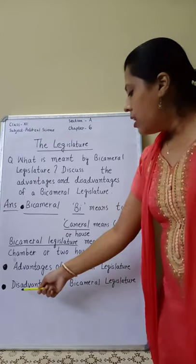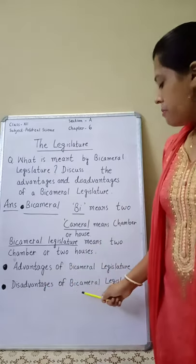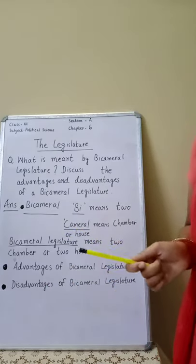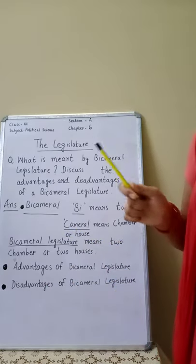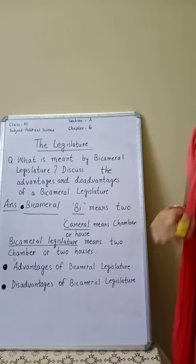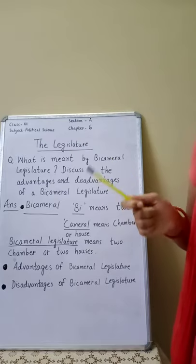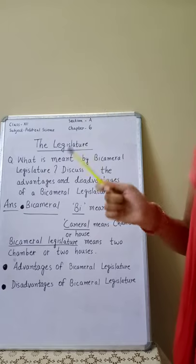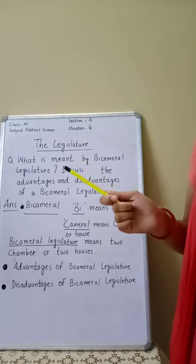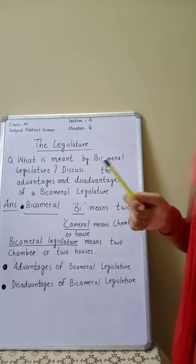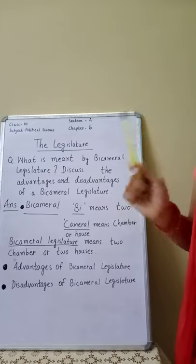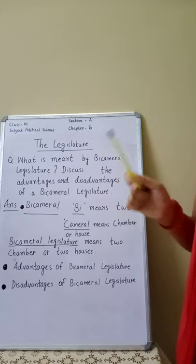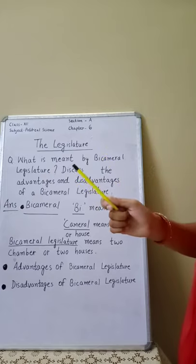Now, the disadvantages of bicameral legislature. First point: prevention of hasty legislation. If there is one chamber, the opposition parties are there to prevent hasty legislation. For that purpose, there is no need for a bicameral legislature.